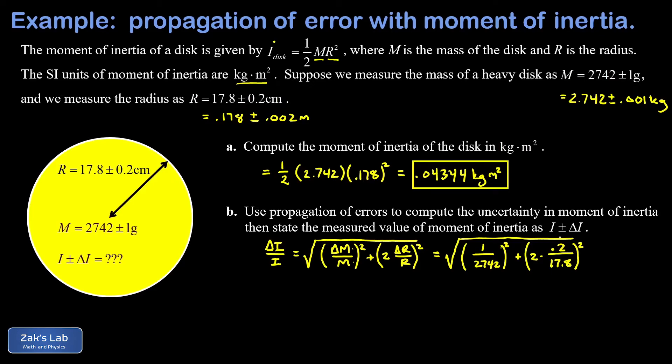So there's two times delta R over R and we have to square that whole thing. When we run the numbers on this we get about 0.0225. Now what we just computed was the relative uncertainty in the moment of inertia.